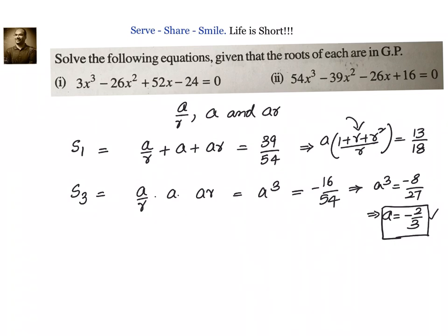and substitute in the first equation what we got. -2/3 into (1 + r + r²)/r is equal to 13/18. Let us simplify that: (1 + r + r²)/r